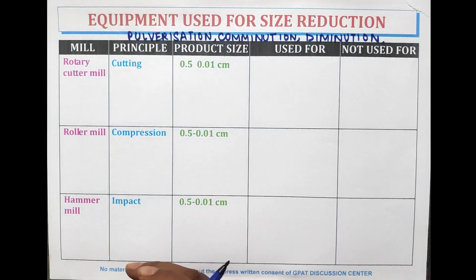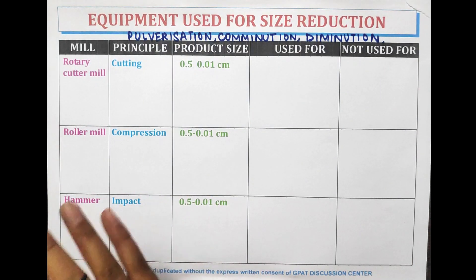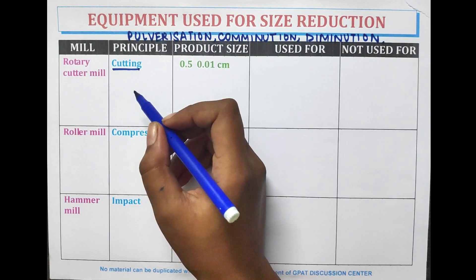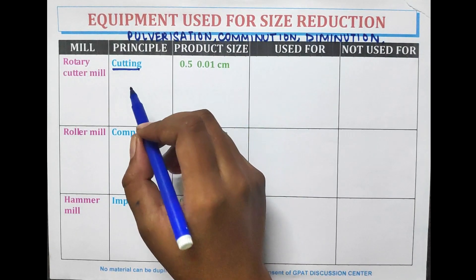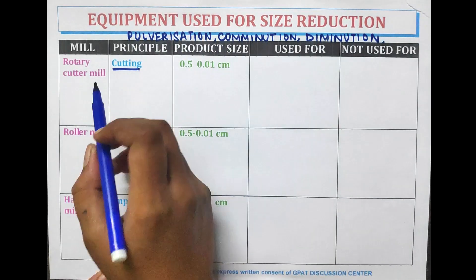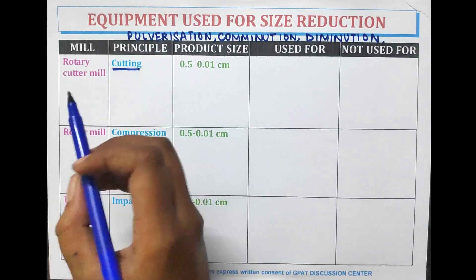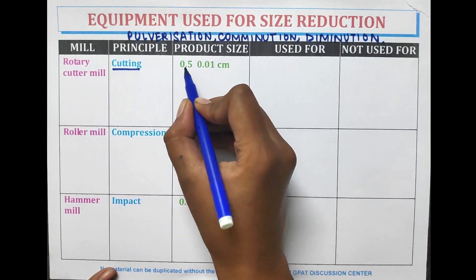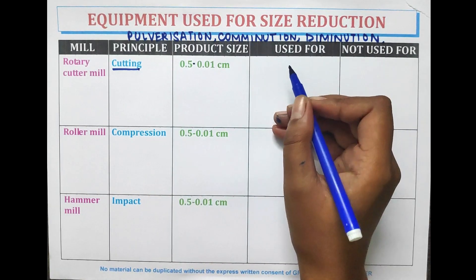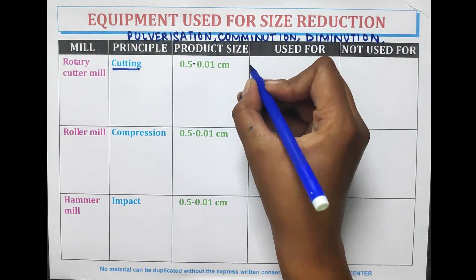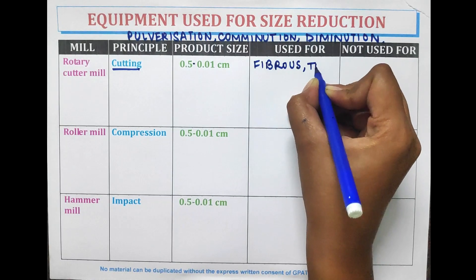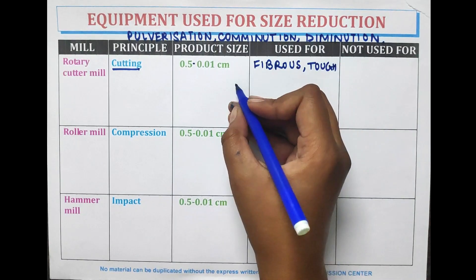The first equipment is the rotary cutter mill. The principle involved in the rotary cutter mill is cutting. In cutting, the material is cut by means of sharp blades. The product size achieved by using a rotary cutter mill is 0.5 to 0.01 cm.